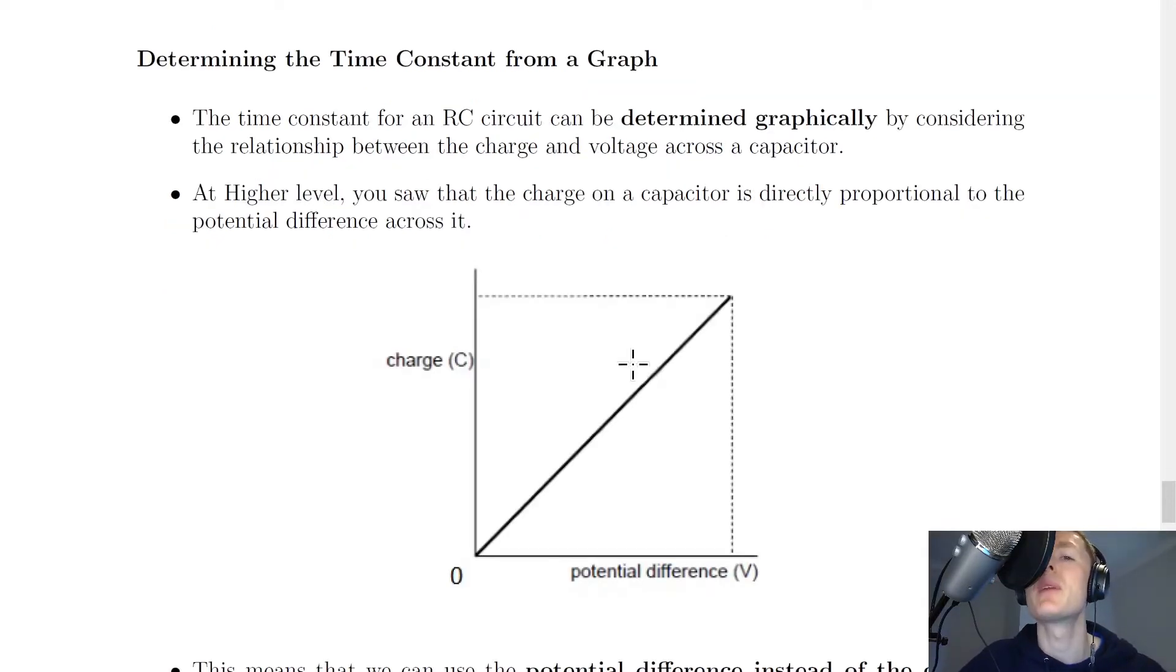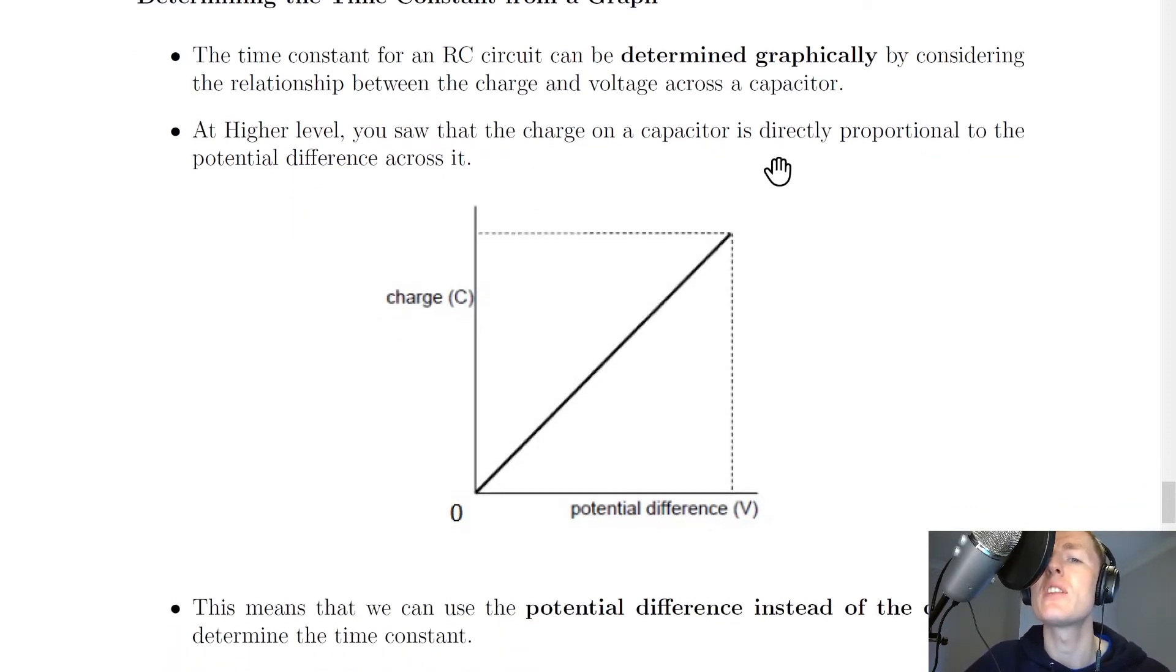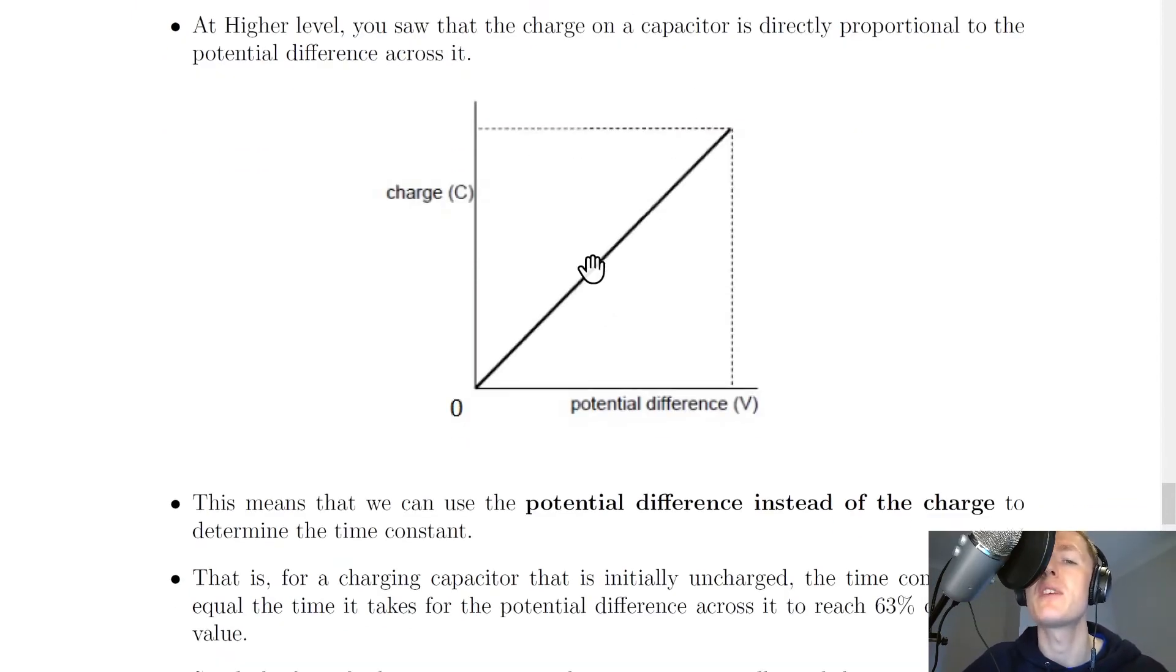As well as determining the time constant from an equation, you could also be asked to determine the time constant from a graph. The time constant for an RC circuit can be determined graphically by considering the relationship between the charge and voltage across a capacitor. At higher level, you saw that the charge on a capacitor is directly proportional to the potential difference or voltage across it.